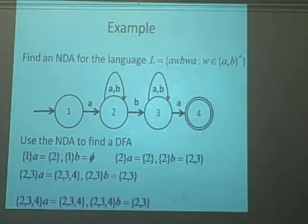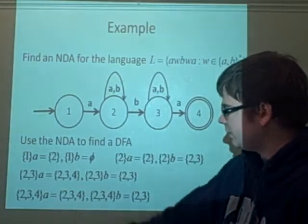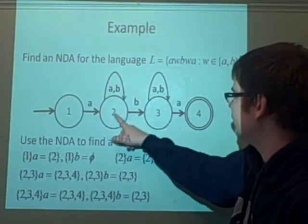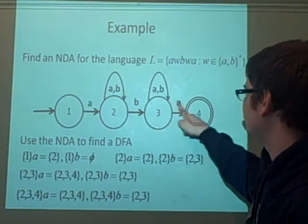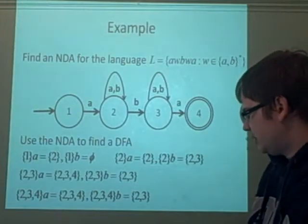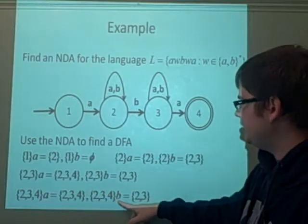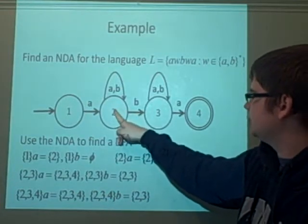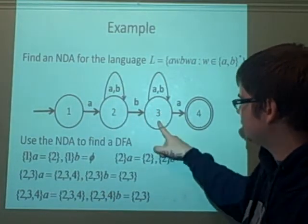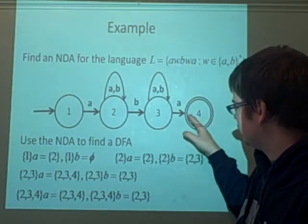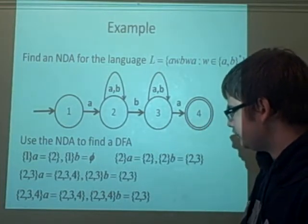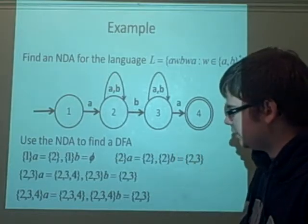So we just apply A and B. If we apply A, we get 2, 3, 4 again, because it can stay in there, it can also stay in there, or it can go to 4. For 2, 3, 4, if we apply B, it can stay in 2. It can also go to 3, or it can stay in 3. Nothing happens with the 4. So we've got all our states written out there.